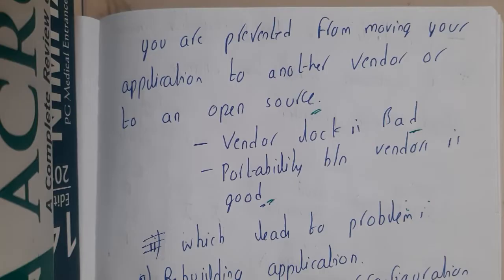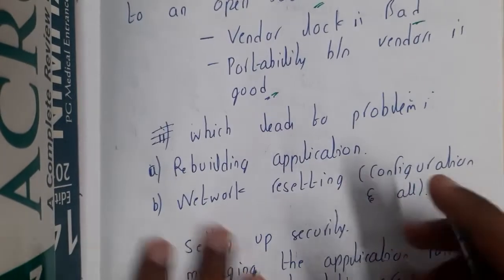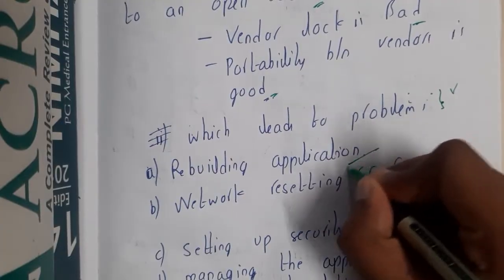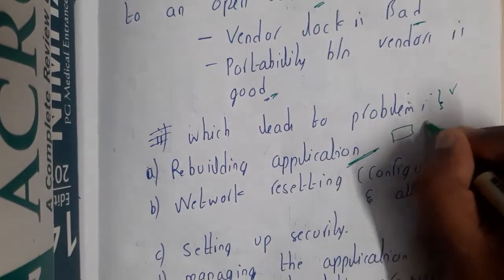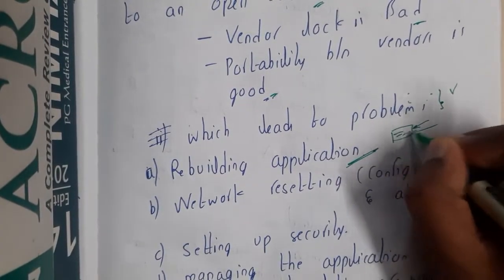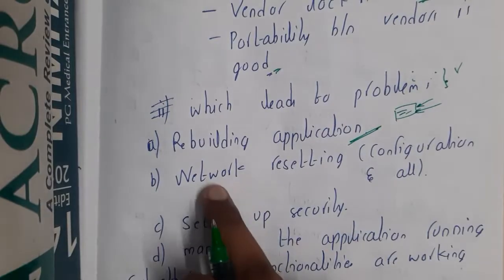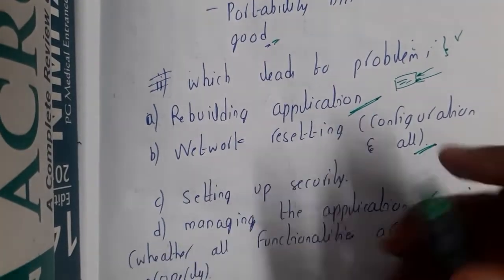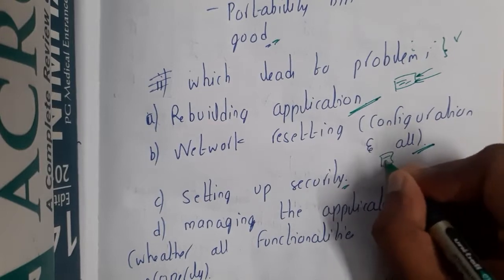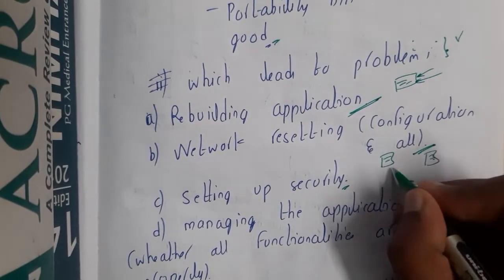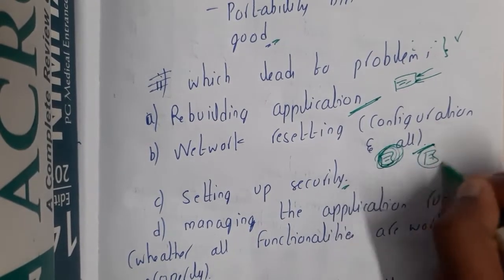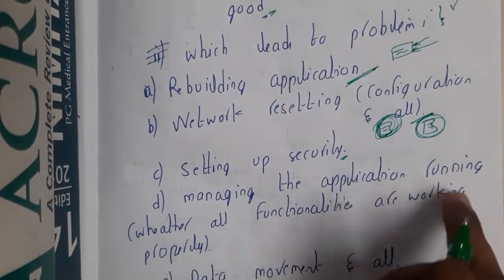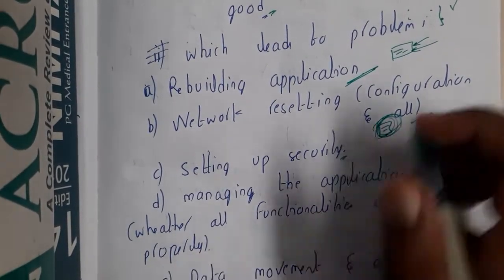If vendor lock-in occurs, you are forced to rebuild your application and change some of your code. Similarly, network configurations need to be remade if there are any network issues. Also, setting up security is a concern — if the security standards of the two providers are different, you need to configure everything yourself.